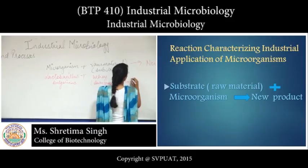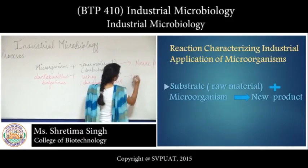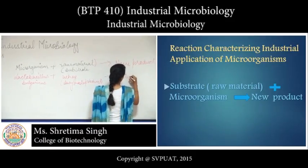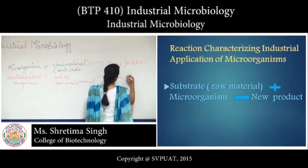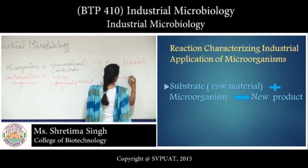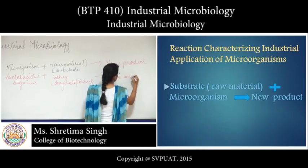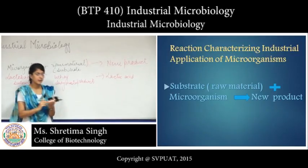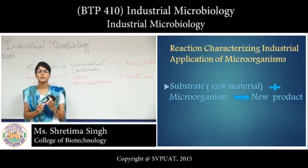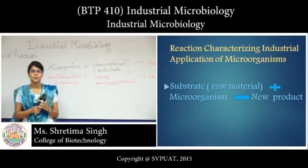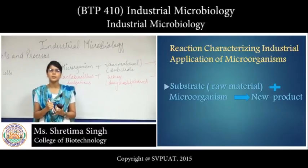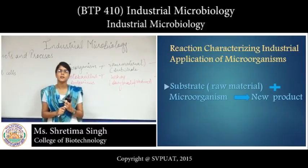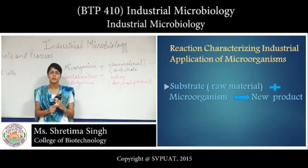This process gives rise to the new end product. In the case of lactic acid, the microorganism used is bacteria — specifically Lactobacillus bulgaricus — along with the raw material whey, which is a dairy waste product, giving rise to lactic acid. Next, the major classes of products produced by microorganisms may be classified into four classes.